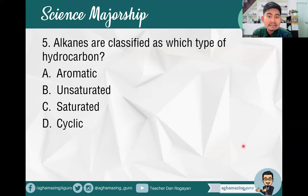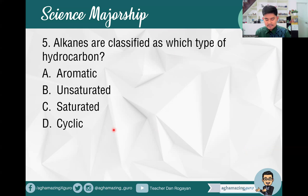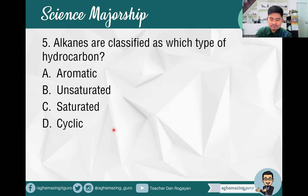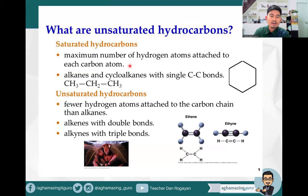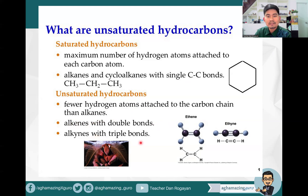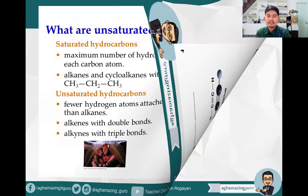Item number five: alkanes are classified as which type of hydrocarbon? A. Aromatic, B. Unsaturated, C. Saturated, or D. Cyclic. The answer is letter C — saturated. Saturated hydrocarbons have the maximum number of hydrogen atoms attached to each carbon atom. Alkanes and cycloalkanes have single carbon-to-carbon bonds. Unsaturated hydrocarbons have fewer hydrogen atoms — alkenes have double bonds and alkynes have triple bonds.